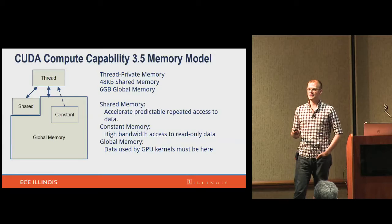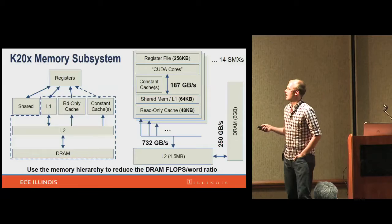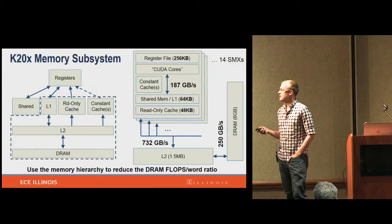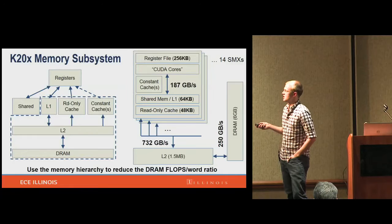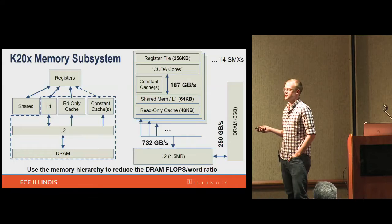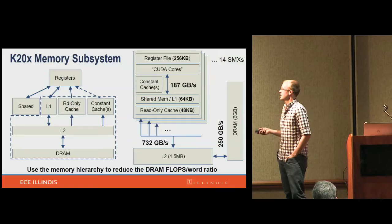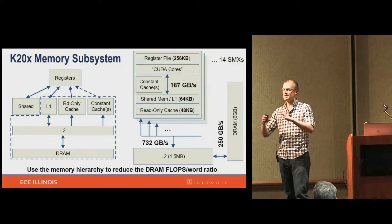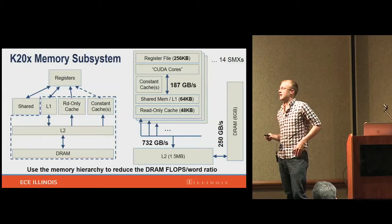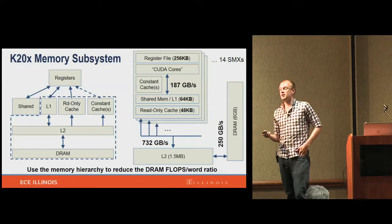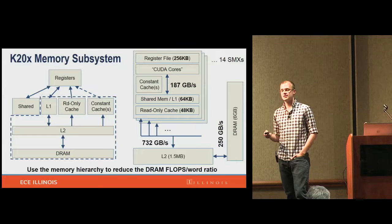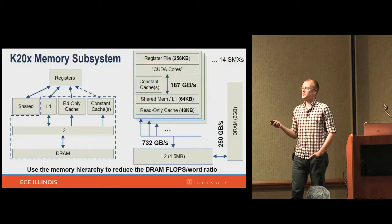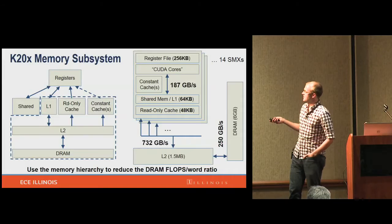What's actually going on under the hood — and this is part of why people struggle to get GPU performance — is that the abstract model on the left differs from the hardware reality on the right. Instead of simple thread memory, you have registers, shared memory, and then global memory backed by an L1 cache, an L2 cache, and the actual DRAM. There's also a read-only cache and a constant cache. Many of these are per SM — a GPU is organized into multiple parallel processors, each with many CUDA cores, shared memory, and L1 combined on chip.